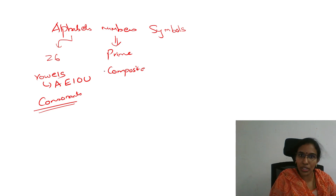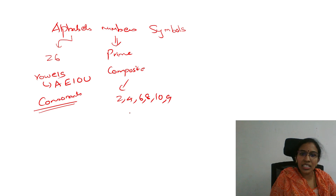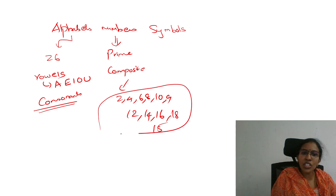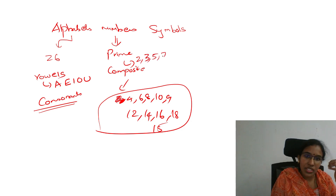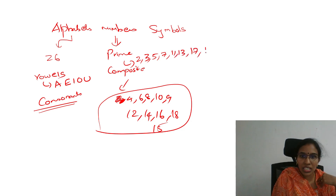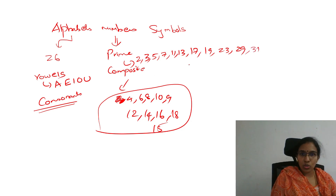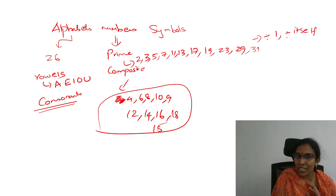That number which is only divisible by 1 and itself — those are prime numbers. Prime numbers are not composite numbers. Composite numbers include: 2, 4, 6, 8, 10, 9, 12, 14, 16, 18, 15 — all composite numbers. Prime numbers are: 2, 3, 5, 7, 11, 13, 17, 19, 23. So the prime number is divisible only by one and itself. If you do not give any numbers, the prime number is limited.